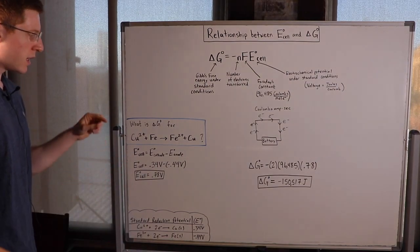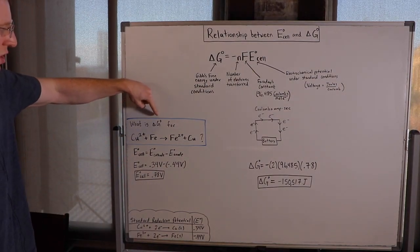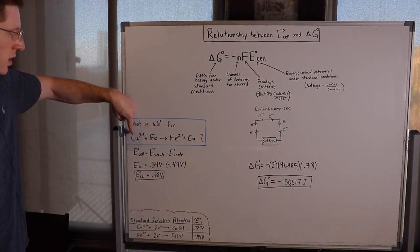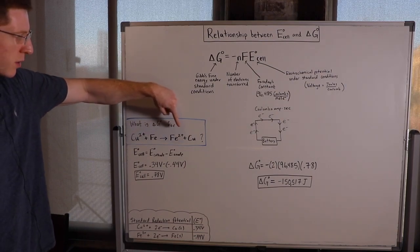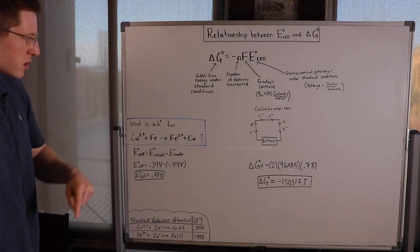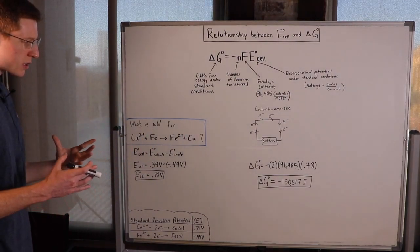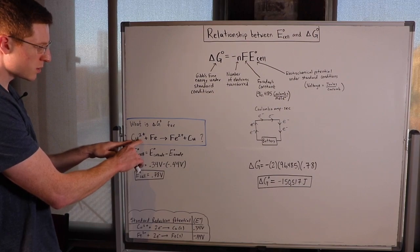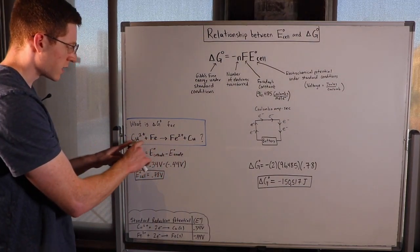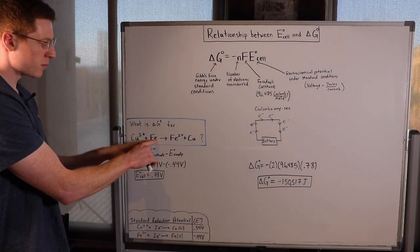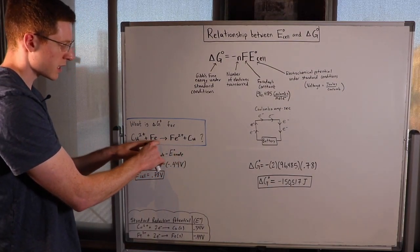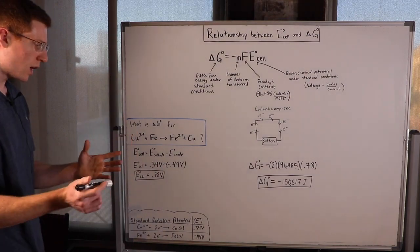So let's do an example problem. What is the delta G-naught for copper 2+ plus iron goes to iron 2+ plus copper? So clearly this is a redox reaction. The copper went from copper 2+ to neutral copper, so it gained two electrons and was reduced. The iron went from neutral iron to iron 2+, so it lost two electrons and was oxidized.